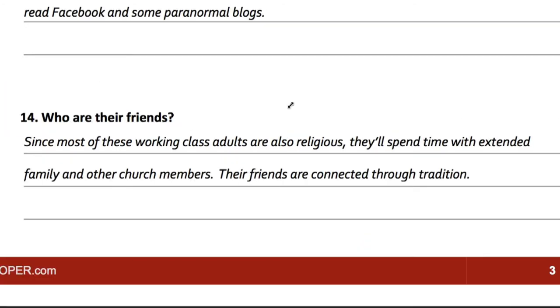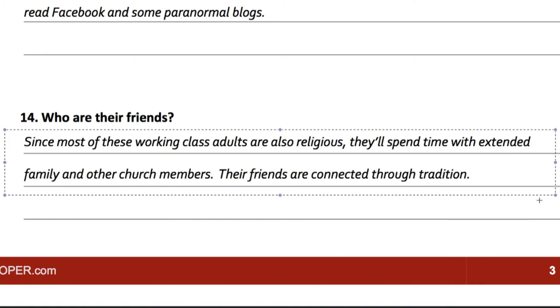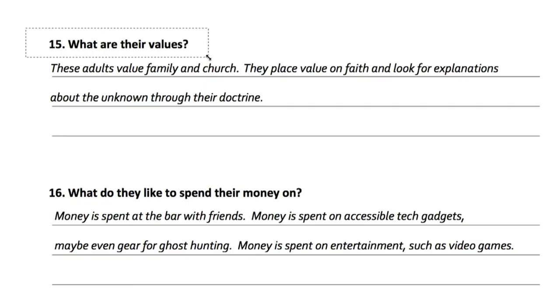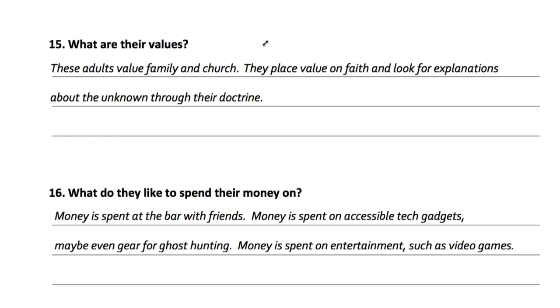Number fourteen: who are their friends? Since most of these working-class adults are also religious, they'll spend time with extended family and other church members — their friends are connected through tradition. This is important to understand because if you're trying to reach this potential audience, you have to understand their world: who they hang out with and what they like to do in their free time, because you're asking them to give up time to watch your film. Number fifteen: what are their values? These adults value family and church. They place value on faith and look for explanations about the unknown through their doctrine.